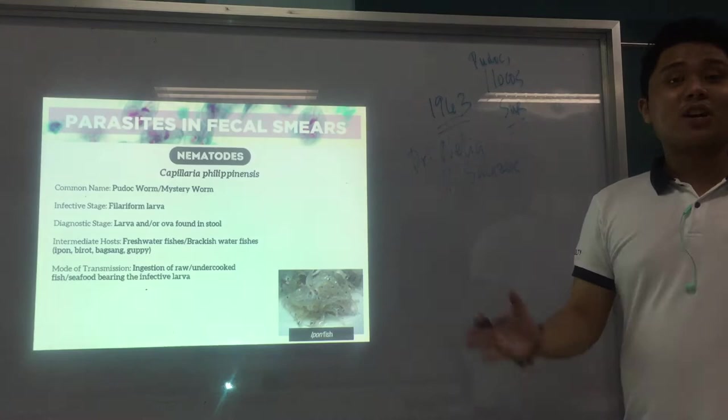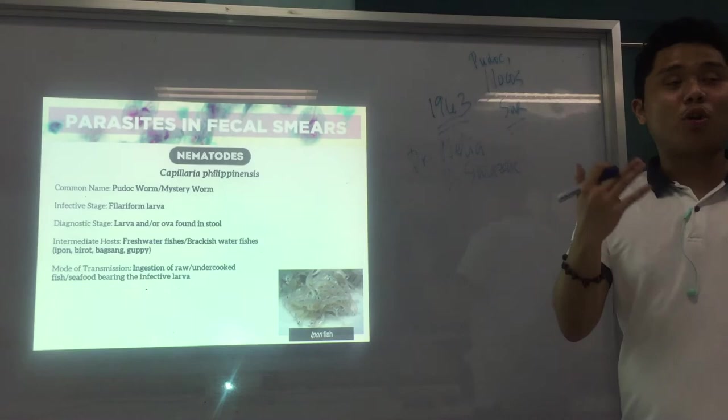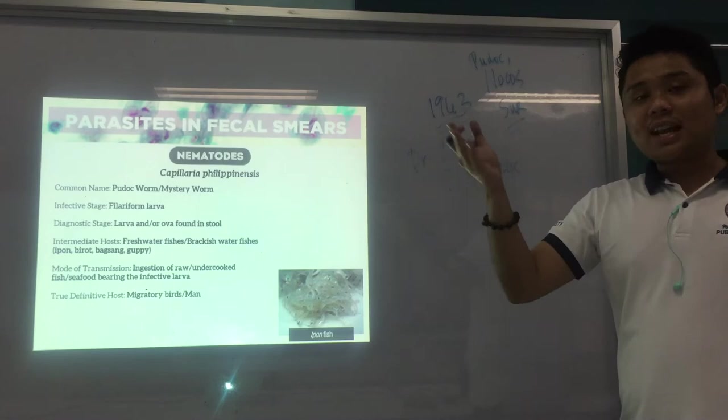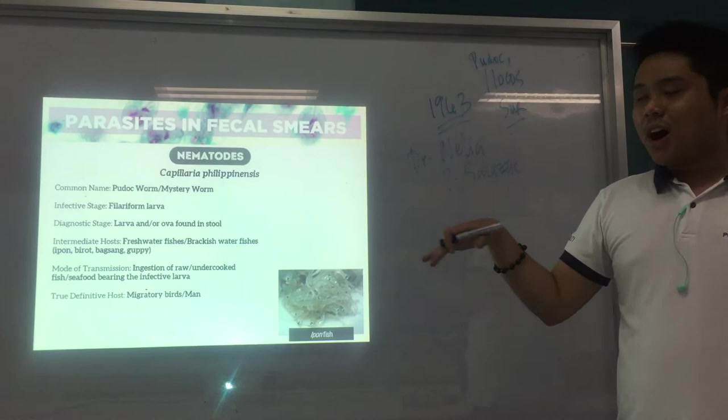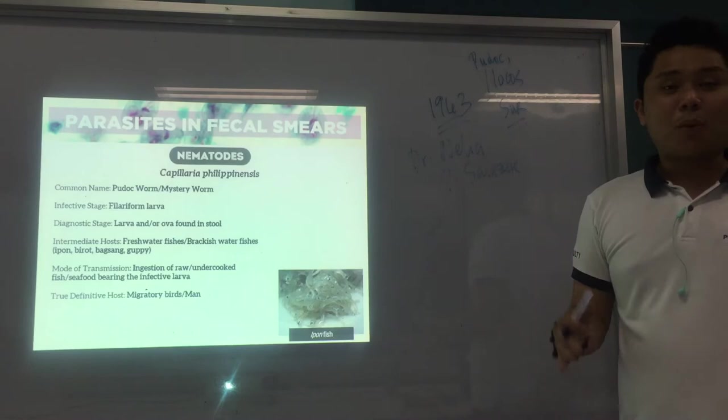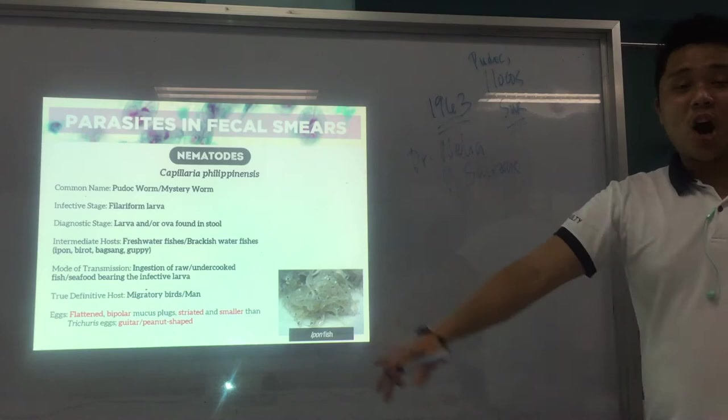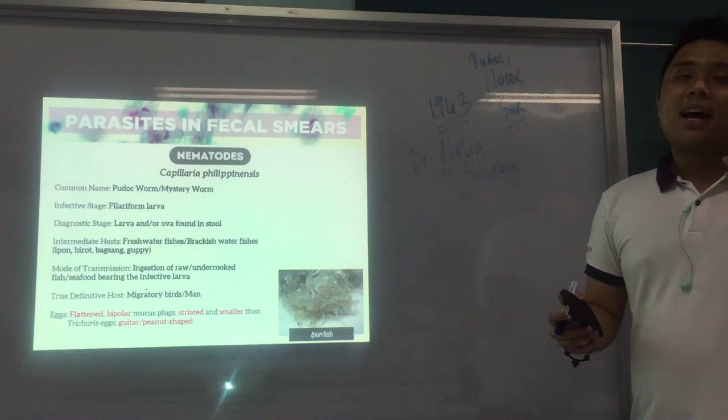The true definitive hosts are migratory birds or man. There are conflicting sources — some say birds are the definitive hosts and man is an accidental host, but others say man is the true definitive host. The entire life cycle of Capillaria is not yet well known and is still under study. The eggs are flattened, bipolar with mucus plugs, striated, and smaller than Trichuris.